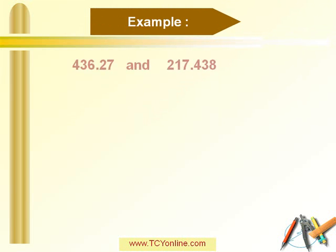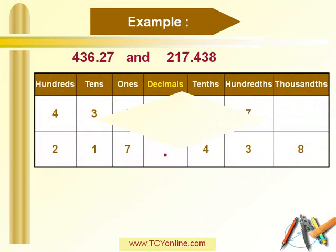Now let's see how to place these numbers in a place value chart. The first number is 436.27. First, place the point in the decimal column. Looking at the number on the left of the decimal point — 436 — 4 goes in the hundreds column, 3 goes in the tens column, and 6 goes in the ones column. Now looking at the number on the right of the decimal point, read as 27 hundredths: 2 goes in the tenths column and 7 goes in the hundredths column.